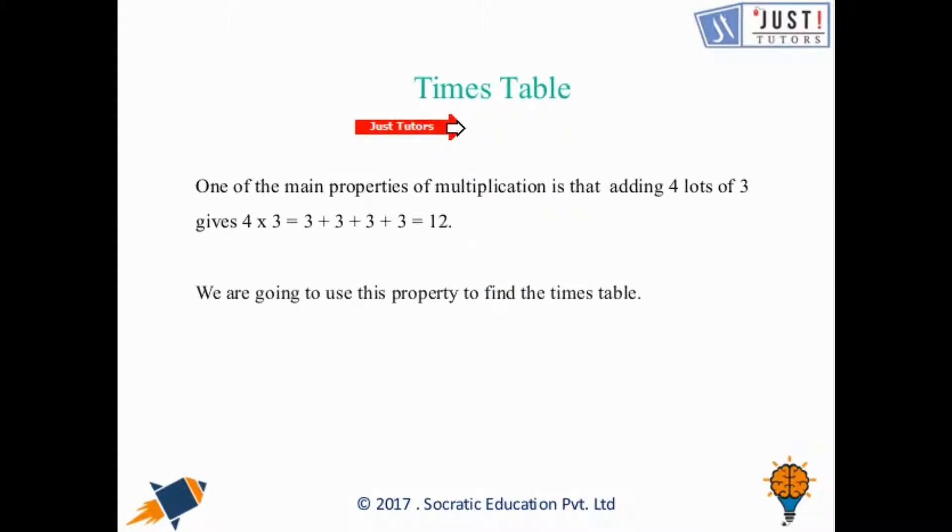One of the main properties of multiplication is that adding 4 lots of 3 gives 4 times 3, or adding 3 for 4 times. That is 3 + 3 + 3 + 3 which will eventually give you 12. Multiplication can be said as same as repeated addition. We are going to use this property to find the times table.